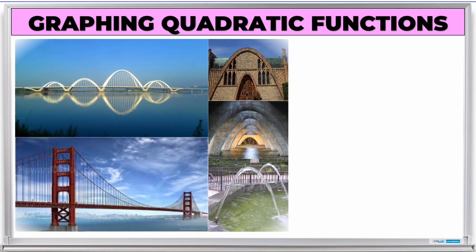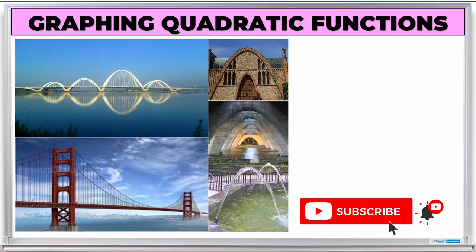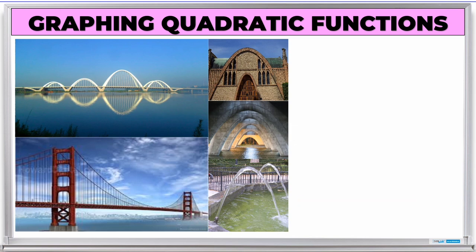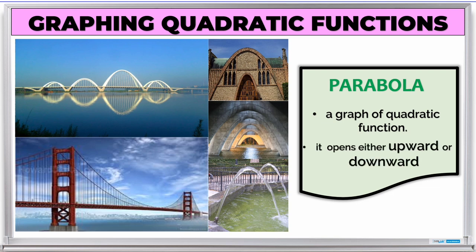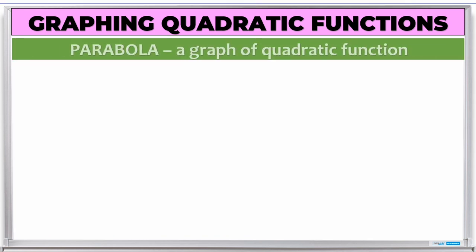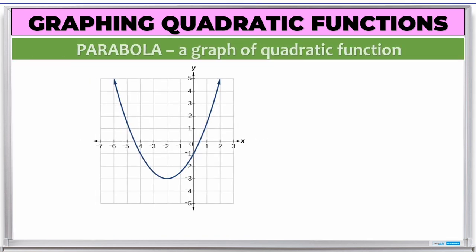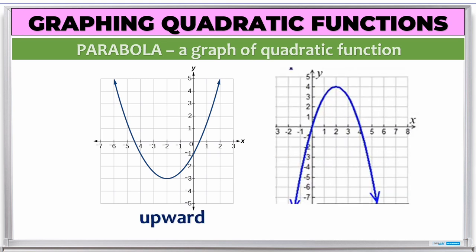Now look at the pictures. What can you notice? You can notice that all of the pictures have the U-shape or U-curve. And actually, that is what we call the parabola — it is the graph of a quadratic function. It opens either upward or downward. This graph opens upward while the other one opens downward.